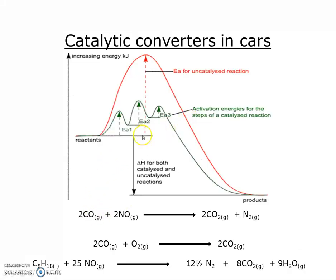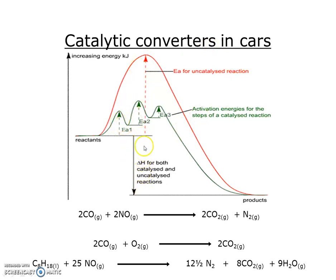Here's an example of the enthalpy profile diagram. For the uncatalyzed reaction between carbon monoxide and nitrogen monoxide, we've got a very large activation energy which is too great to overcome. But if we use a catalyst, we can use these smaller activation energies for the three different steps. Overall, the enthalpy change is the same regardless of whether a catalyst is used — it's the difference in enthalpy between the reactants and the products.